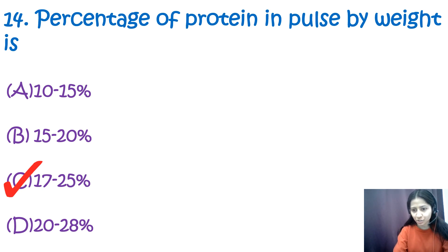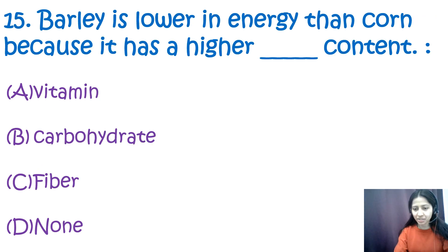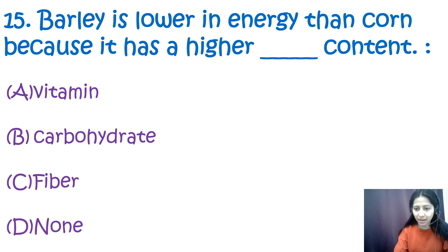Question 15: Barley is lower in energy than corn because it has higher — vitamin, carbohydrate, fiber, or none? The most appropriate answer is C — fiber. Barley is lower in energy than corn because it has a higher fiber content.